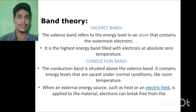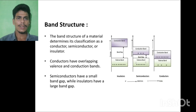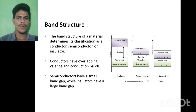Conduction Band: situated above the valence band, it contains energy levels that are vacant under normal conditions like room temperature. When an external energy source such as heat or an electrical field is applied, electrons can break free from the band structure. Conductors have overlapping valence and conduction bands; semiconductors have a small band gap, while insulators have a large band gap.